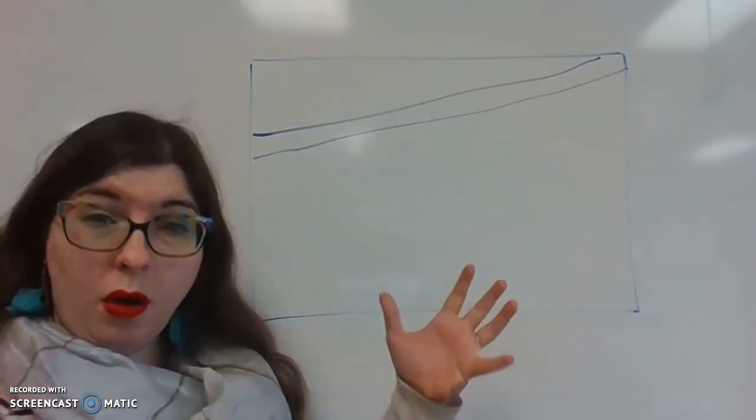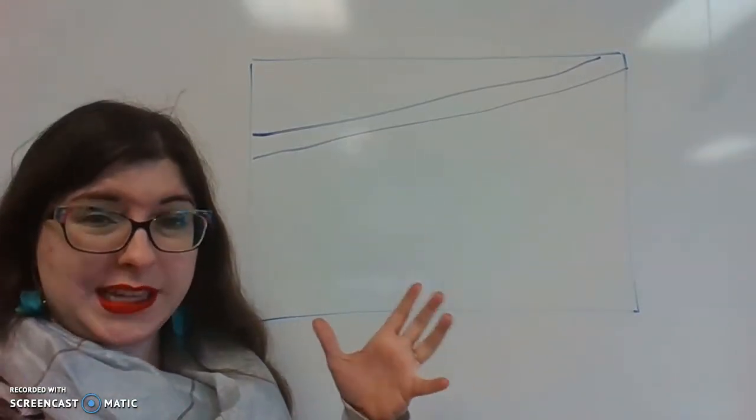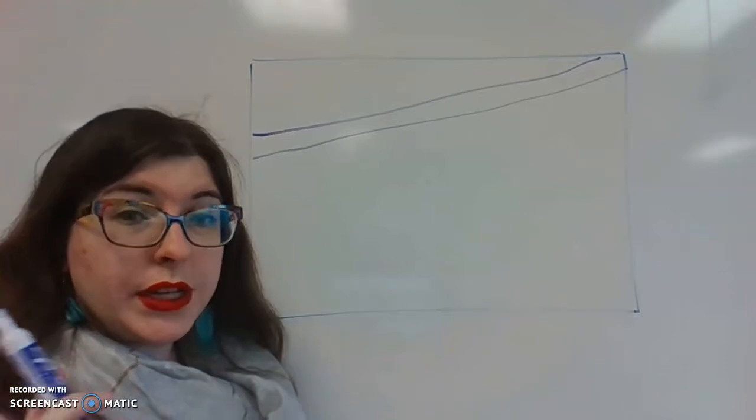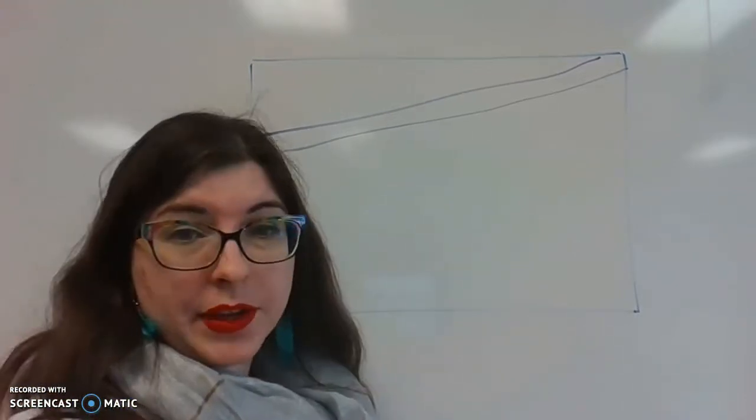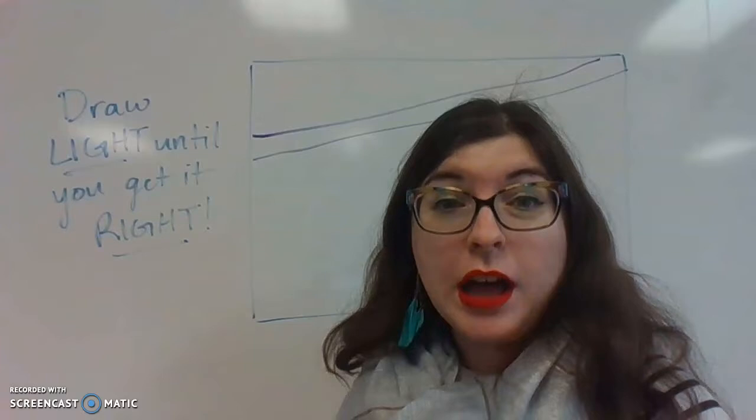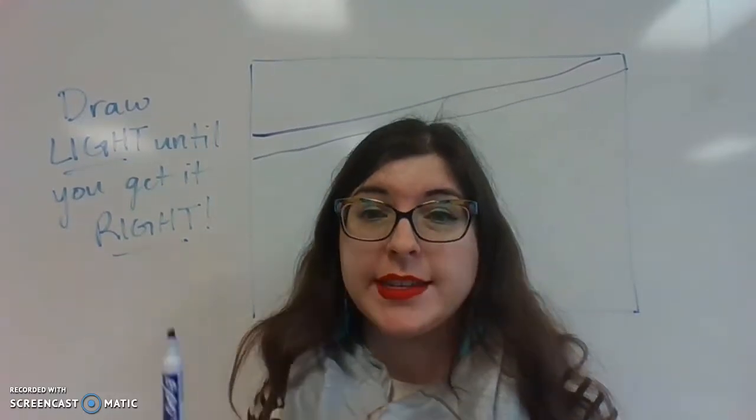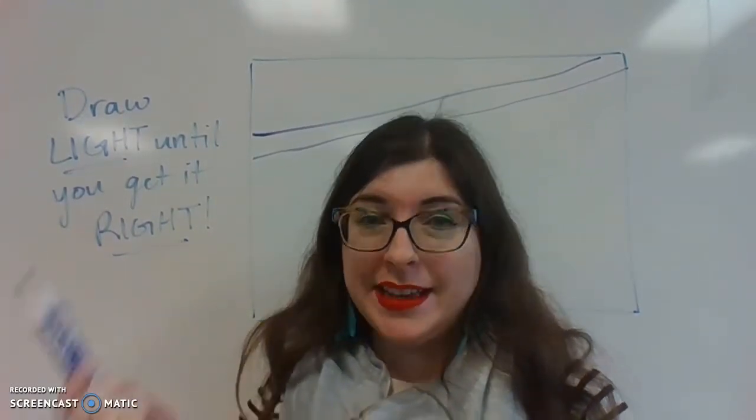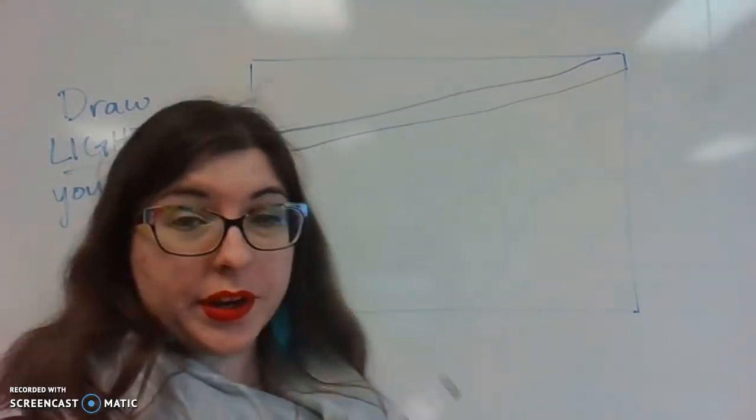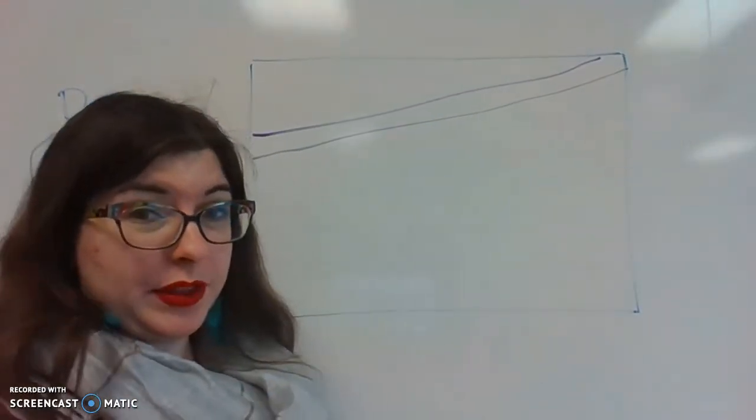Now I'm going to make a big oval and this is going to be pretty much the size of the sloth. This is where you need to remember to draw light until you get it right. I'm even going to write that on the board. Draw light until you get it right because we will be erasing a lot of these lines. It's easy for me to erase because I'm on a whiteboard. You've got to take some actual effort with your pencil.